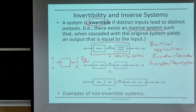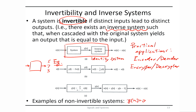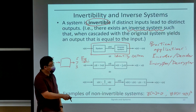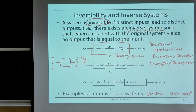A trivial example is when the output is a constant. For example, when you have a system that produces zero no matter what the input is, then this system is not invertible. Or if you have a system where the output is equal to the square of the input, then this is also not invertible, because plus and minus the same value will lead to the same output.